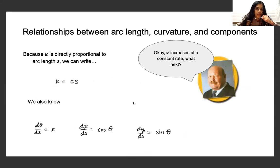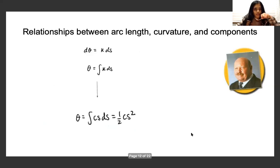So because K is directly proportional to arc length S, we can write K equals CS. We also know these other relationships simply by their definitions of curvature of the X component and the Y component. So integrating dθ = K ds gives us the integral of K ds and then we can substitute in CS for K and that gives us θ = 1/2 CS².